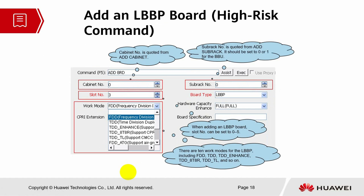Similarly, this is to add an LBBP board — also a high-risk command. Cabinet and subrack, you follow back what you configured earlier. The slot number will be based on the UBBP or LBBP slot position, and you also have to define the board type as LBBP. You have to define whether this is an FDD or TDD network and make sure the hardware capacity is set to full.